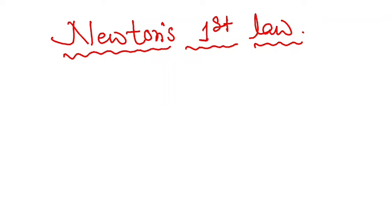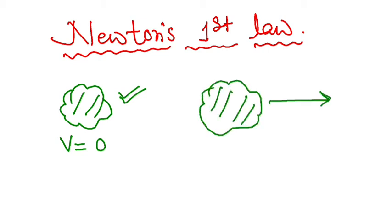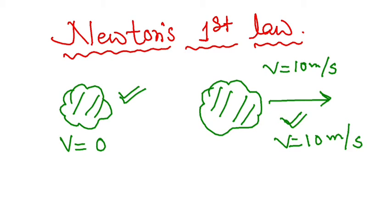Before discussing today's topic, we need to revisit Newton's First Law. What is Newton's First Law? If an object is at rest, its velocity is zero — it wants to stay at rest. For the other case, if an object is moving with a certain velocity, say 10, it wants to keep moving with that velocity of 10. So, an object at rest wants to remain at rest, and an object in motion wants to remain in motion.